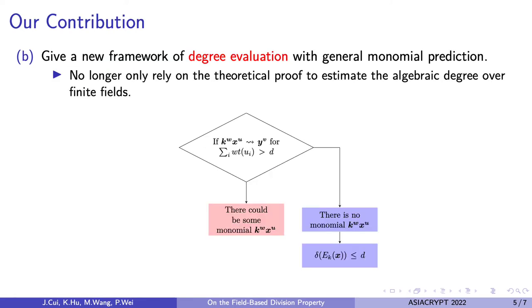By using this tool, we propose a new algorithm for degree evaluation based on the link between binary field and binary extension field, and we get tighter algebraic degree bounds. We can no longer only rely on the theoretical proof to estimate the algebraic degree over finite fields.